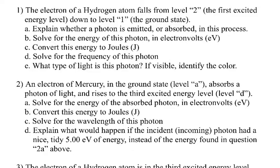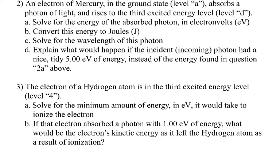Second problem: an electron of mercury in the ground state, which is level A, absorbs a photon and rises to the third excited energy level, level D. They use numbers for hydrogen and letters for mercury to distinguish between them. I want to know the energy of that photon in electron volts, convert it to joules, and solve for the wavelength. Then for part 2B: what if the electron in the ground state got hit by a photon of exactly five electron volts — explain what would happen in that case, if anything.